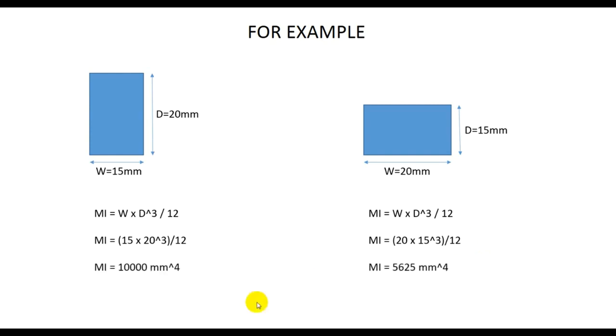So after that, if we see that here this is our moment of inertia and this is also our moment of inertia. So you are seeing that this type of beam will resist maximum moment of inertia than that. That's why we provide the maximum depth and minimum width.